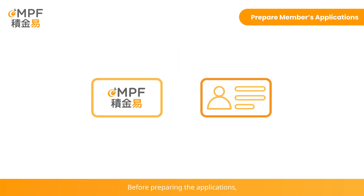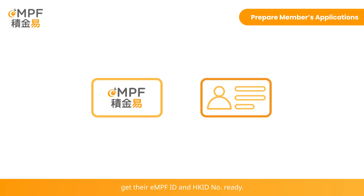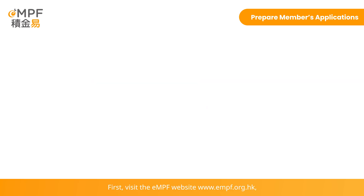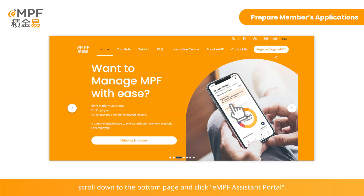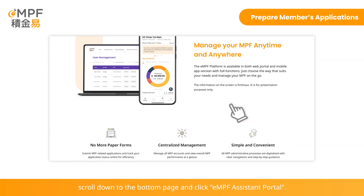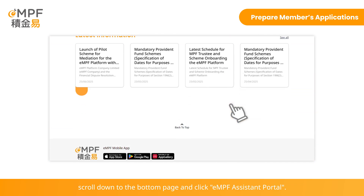Before preparing the applications, please communicate clearly on the instruction details with the respective member, and get their eMPF ID and Hong Kong ID number ready. First, visit the eMPF website at www.empf.org.hk, scroll down to the bottom of the page, and click eMPF Assistant Portal.